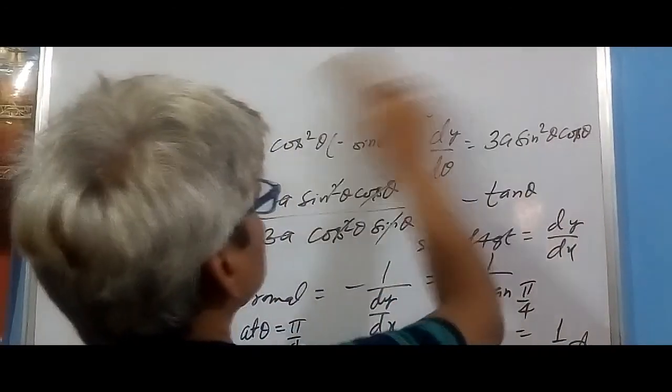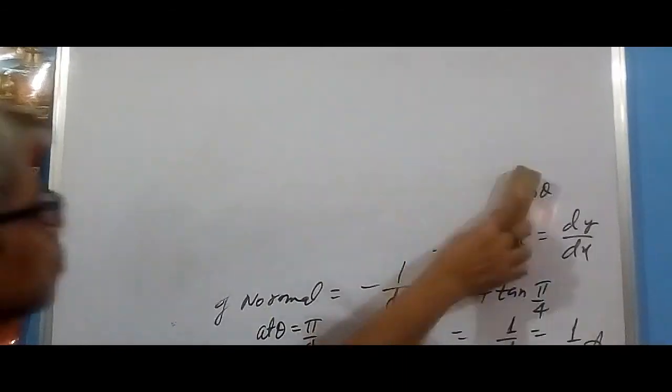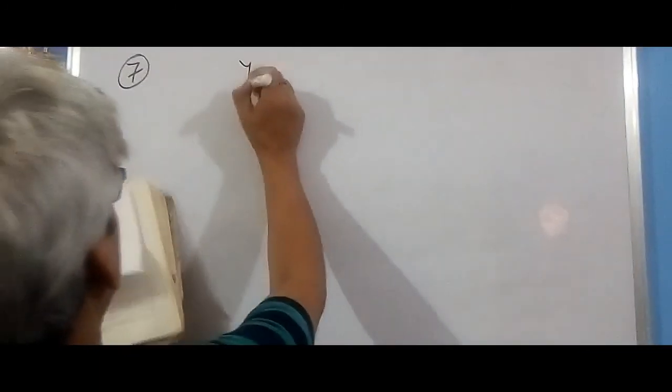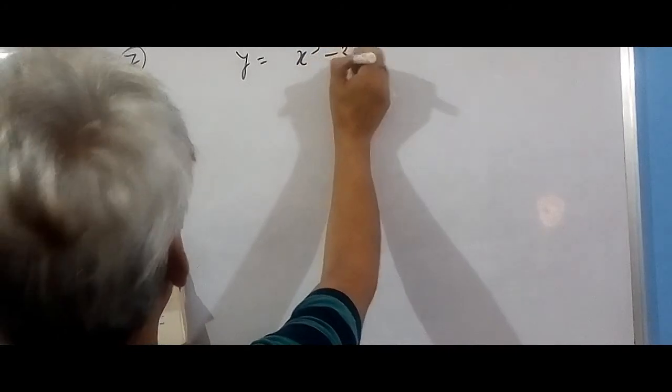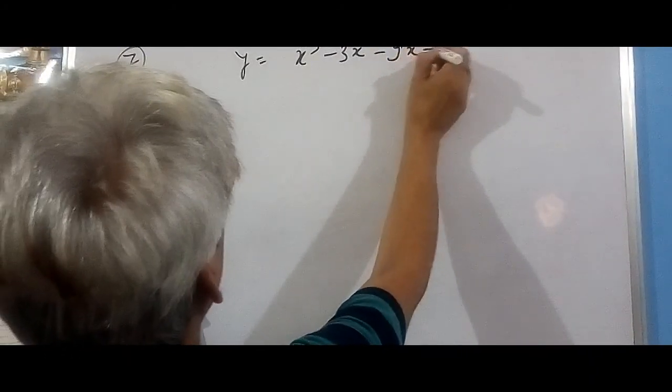For question 7, there is a slightly different concept. The question says: find the point at which the tangent to the curve is parallel to the x-axis. Remember: if parallel to x-axis, then dy/dx = 0. If parallel to y-axis, then dy/dx = 1/0 (undefined). The equation of curve is: y = x³ - 3x² - 9x + 7.